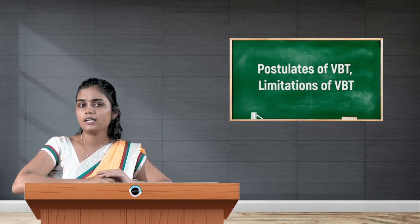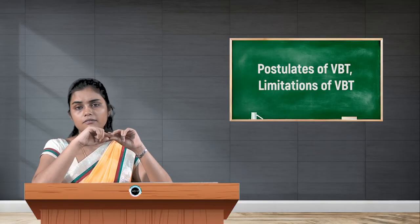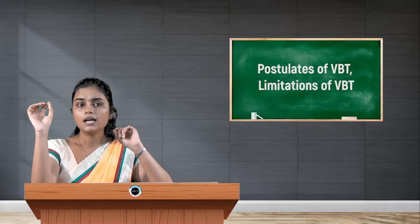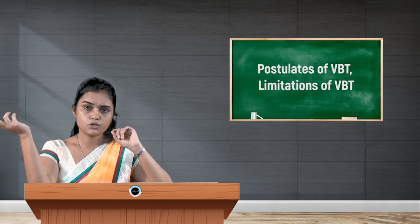The next limitation is that the theory gives no evidence for the magnetic field generated by the orbital motion of electrons. The magnetic field is generated by two important factors: orbital motion and spin motion. VBT does not provide any evidence regarding the magnetic field generated by orbital motion.